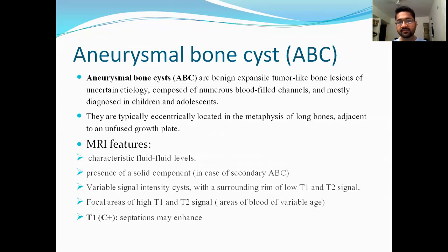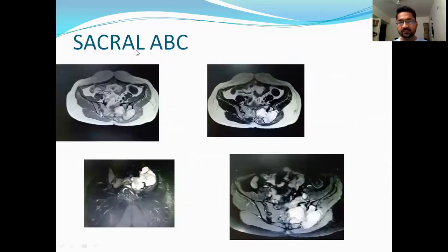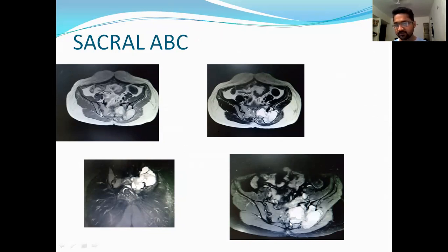Next is aneurysmal bone cyst. It is a benign tumor located within the metaphysis of long bones, placed eccentrically. MRI characteristics include fluid-fluid levels, variable intensity cysts, and variable intensity on T1 and T2. Here is a case of aneurysmal bone cyst within the sacrum showing hyperintense components with various loculated fluid on imaging with characteristic fluid levels.